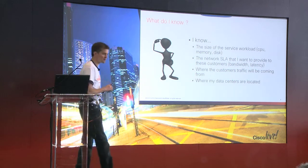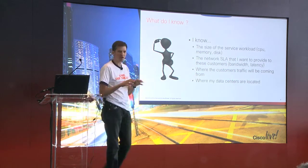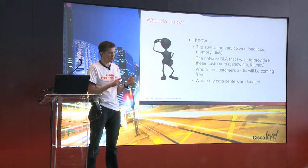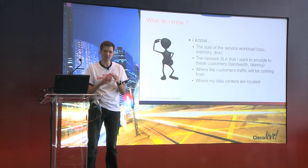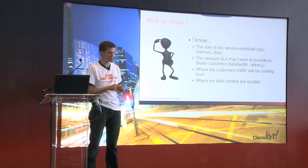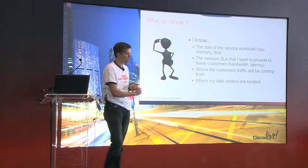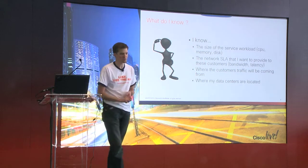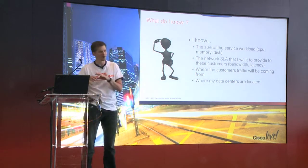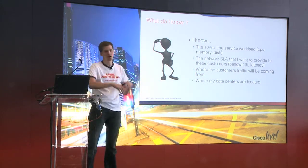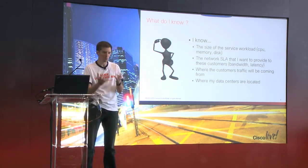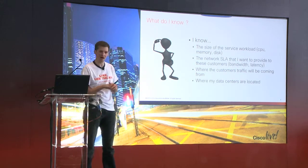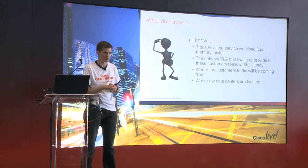So let's start with what we know. We're trying to place a workload. That workload consists of a set of data center resources: a number of vCPUs, an amount of memory, an amount of disk space, perhaps at a certain tier, and perhaps a set of affinity constraints for the data center resources.